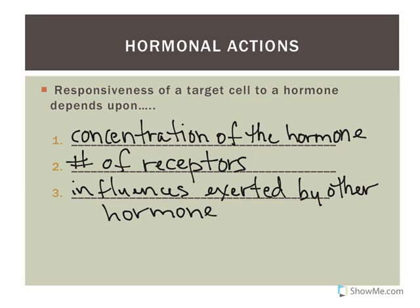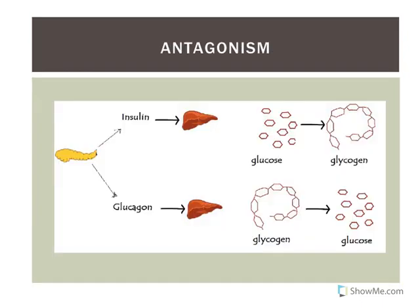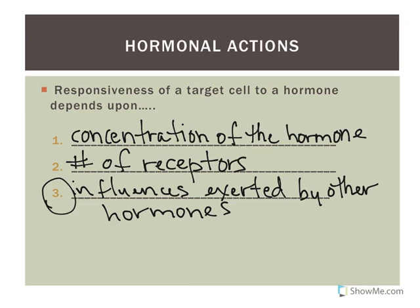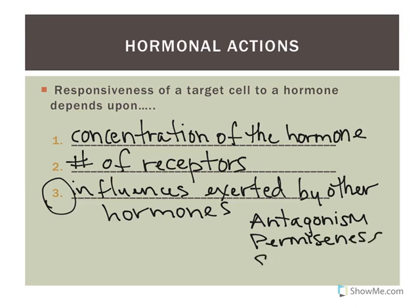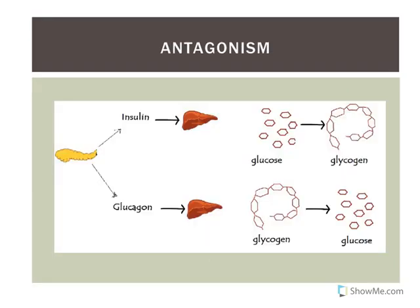Hormones don't exist in a vacuum. There's a multitude of hormones circulating in the body at one time, and they can interact with each other. There are three types of hormonal interactions: antagonism, permissiveness, and synergism. Let's look at antagonism first. Antagonism is when two hormones have opposite effects.